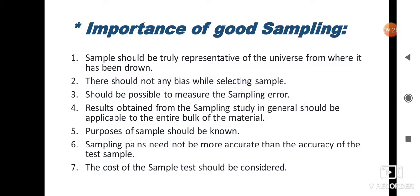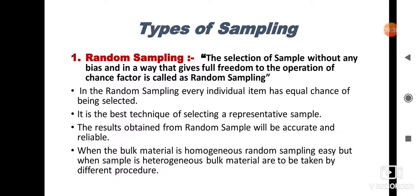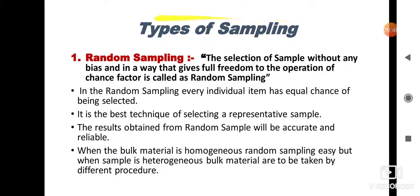Now we will move to the types of sampling. There are two types of sampling: the first type is random sampling and the second type is non-random or systematic sampling. First we will see random sampling.